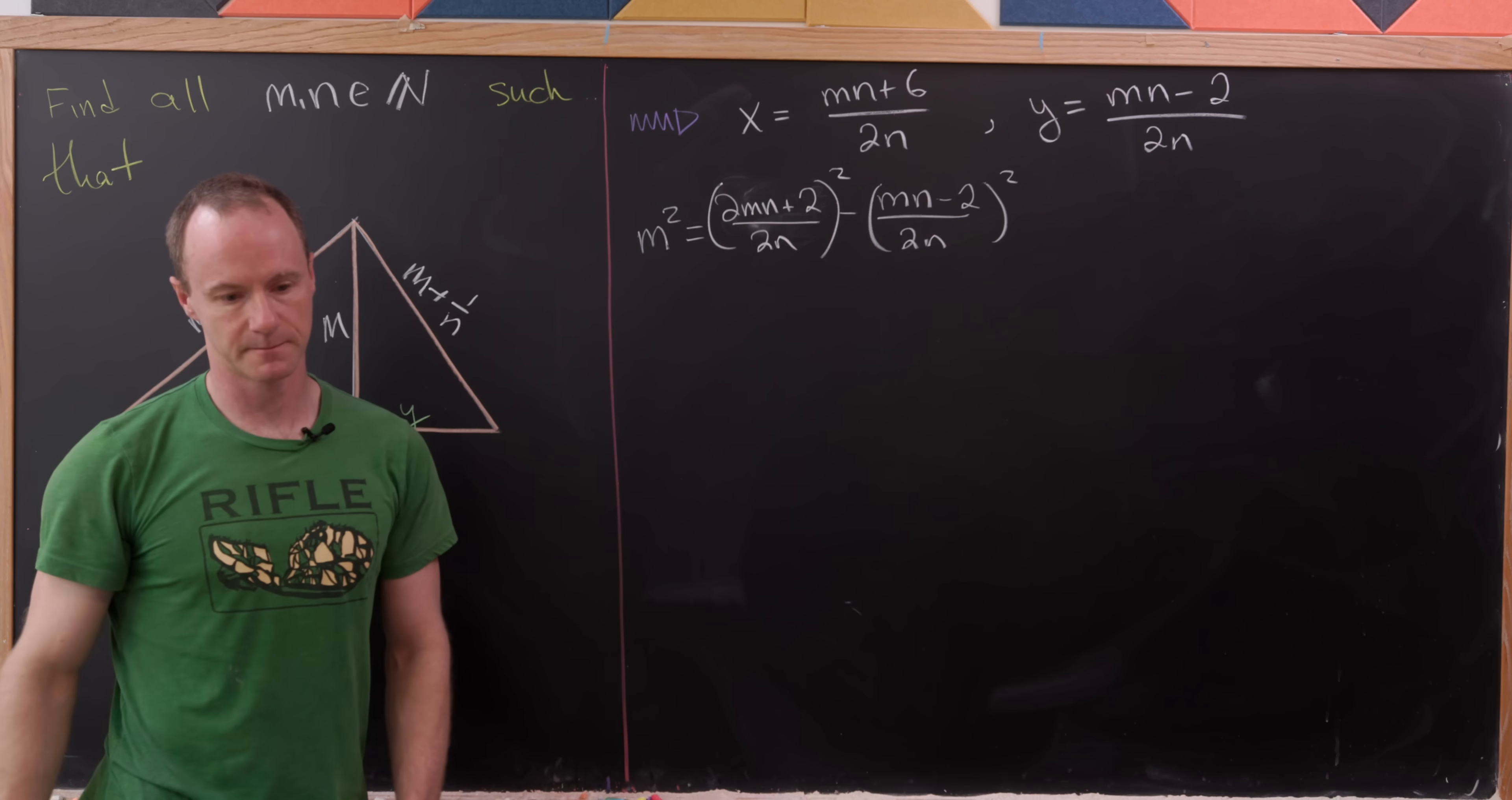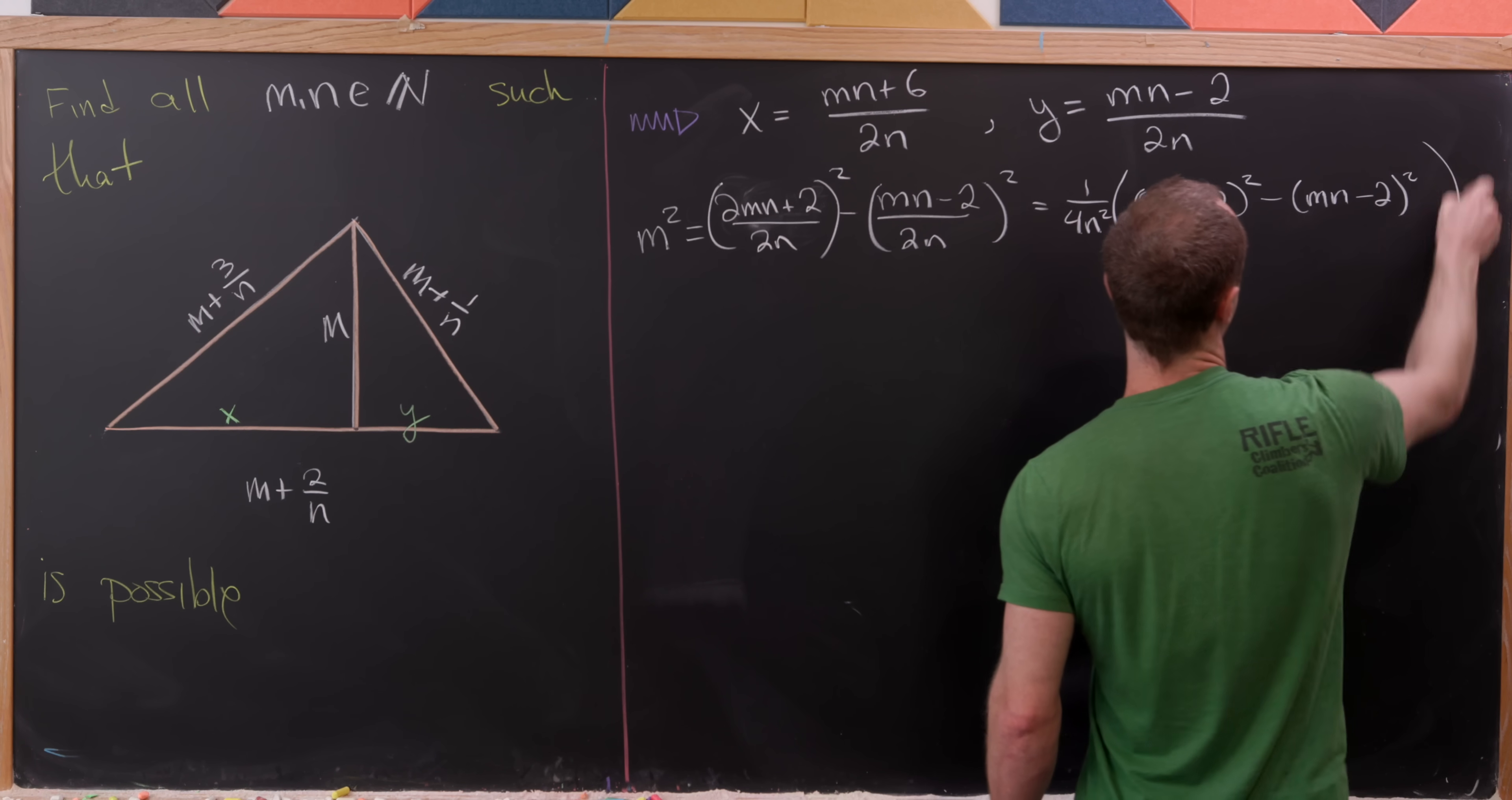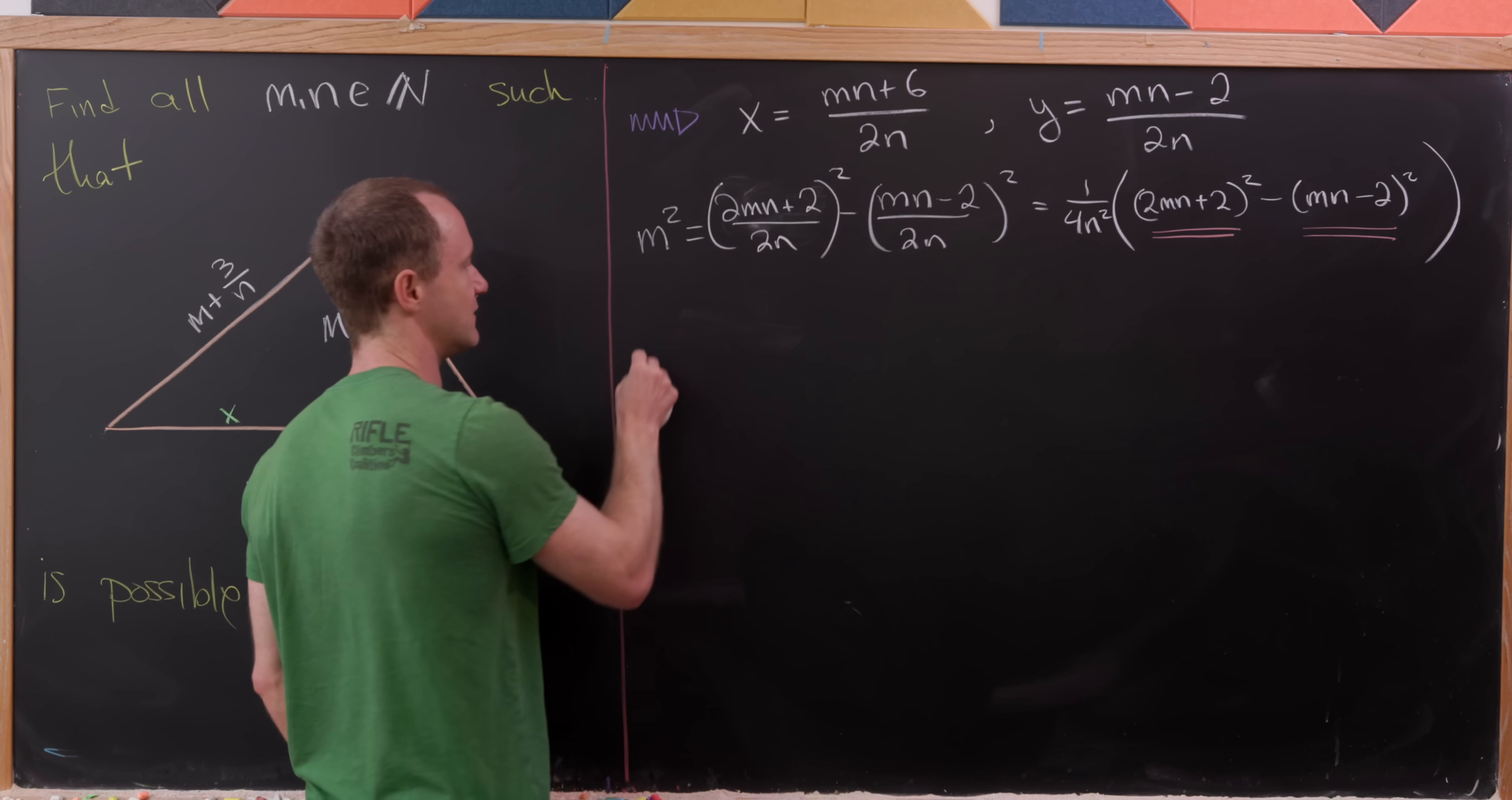Then we have that squared. Now I went through all of that work because now I can square that denominator in each of those terms and then factor it out. That'll leave me with 1 over 4 times n squared. And then I'll have 2 m n plus 2 squared and then minus m n minus 2 squared. And now I can use a difference of squares factorization on these terms right here. This m n times 2 plus 2 and this m n minus 2 squared. So I'll still have the 1 over 4 n squared out front, which looking at it, I'm going to actually multiply that up to the other side of the equation.